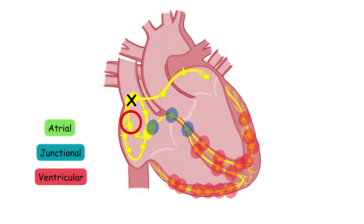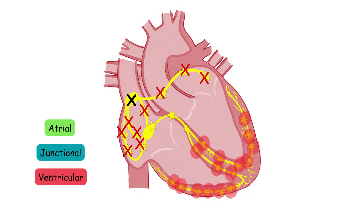If that one too fails to work, another focus below in the atria will take over the job. And if all of the atrial foci fail to work, then junctional foci come to the front. Now if all junctional foci fail to produce a stimulus, then a focus from the ventricles comes to the front to save the situation. Amazing, right?